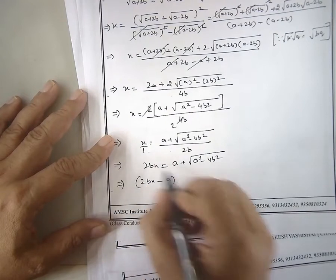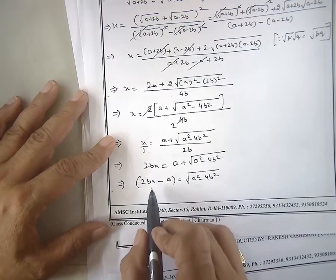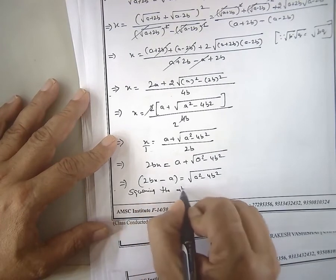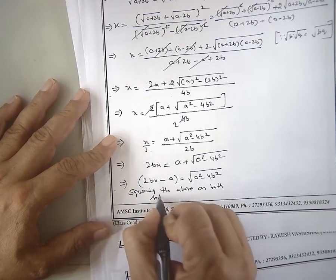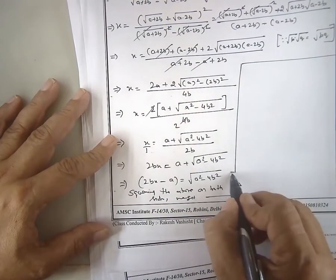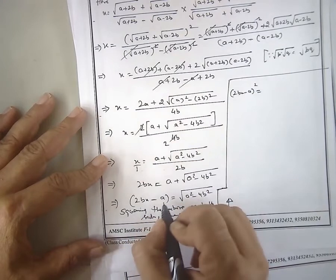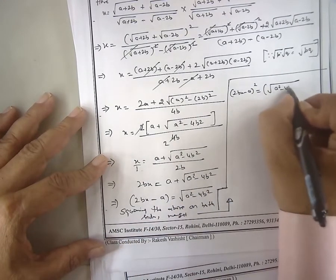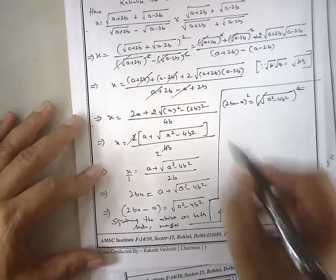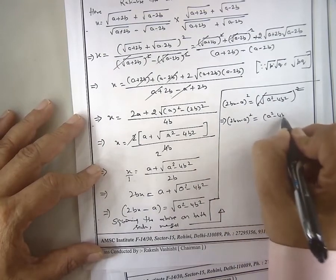Now we're squaring both sides. We get squared on both sides. This is 2bx minus a whole squared minus 4 times 2bx minus a squared minus this squared.